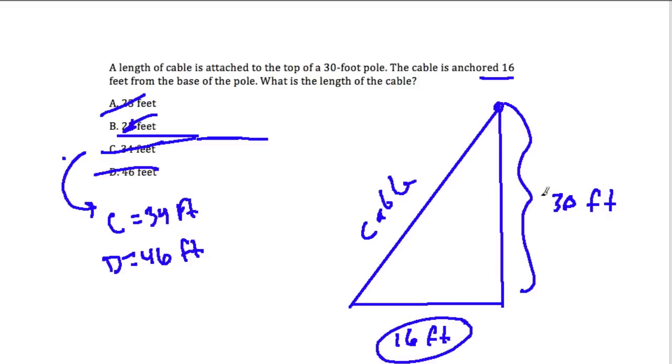We take one leg squared plus the other leg squared. So it's going to be 30 squared or 900 plus 16 squared, and I'm plugging that in to get 256. Combine the two, and that gives us our cable squared, it's 1156. And then we take the square root of 1156, which is 34 feet. And that's the length of our cable, which is choice C.